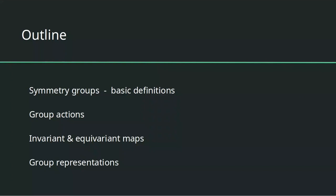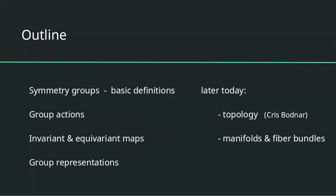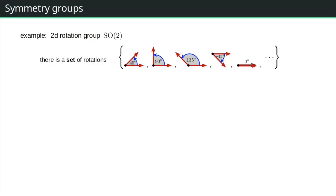Later we will have a talk by Chris, who will introduce some basic topology, and then I will give a talk about manifolds and fiber bundles. I want to introduce the group with visual examples. In the case of the rotation group SO(2) in two dimensions, a group is always a set of elements — for instance, the set of all rotations from zero to two pi.